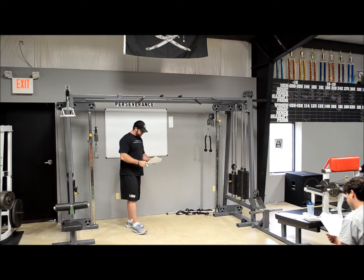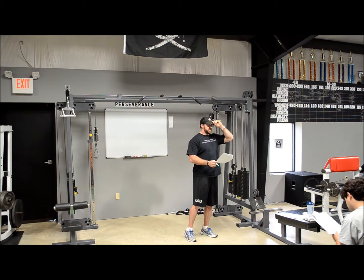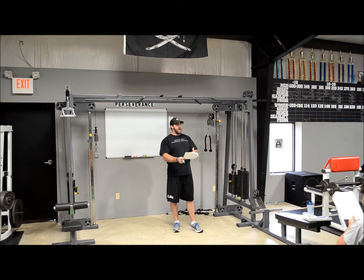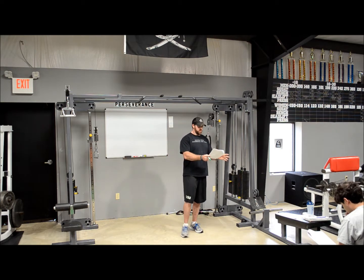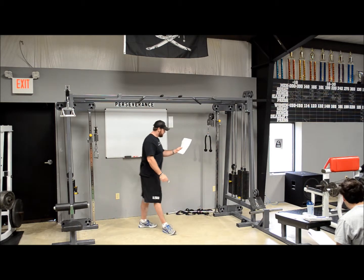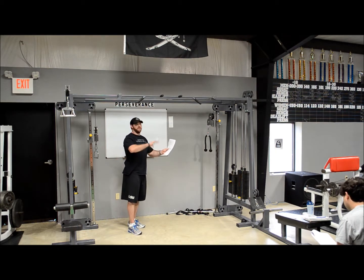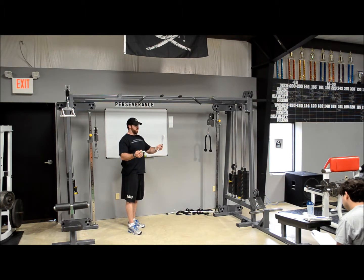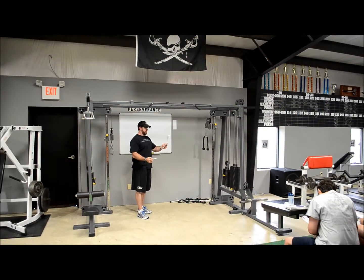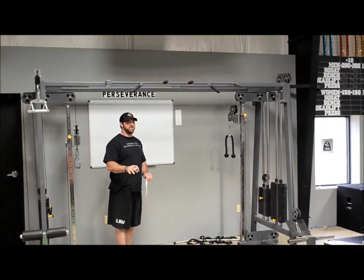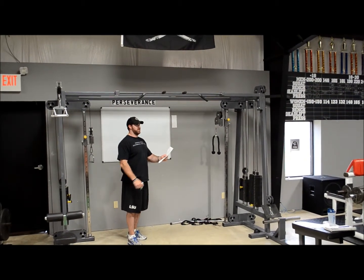This is called Prilepin's chart. Prilepin was a Soviet sports scientist who figured out, for each percentage of max, what the optimal reps per set and total reps are. For the 55 to 65 percent range, reps per set are between three to six, and the total rep range for the entire lift would be between 18 and 30. Come up to 90 percent, it's one to two reps per set, with a total range around four to ten. That is basically the whole foundation of the Westside conjugate method — that's what they take it off of.